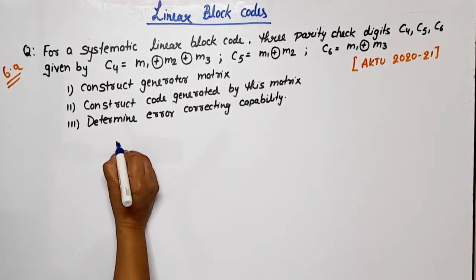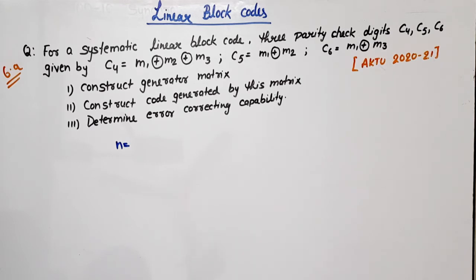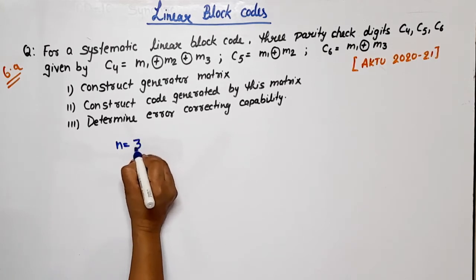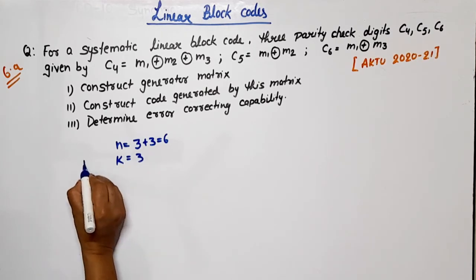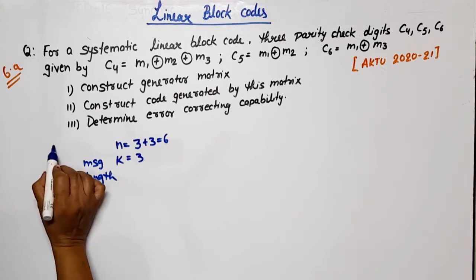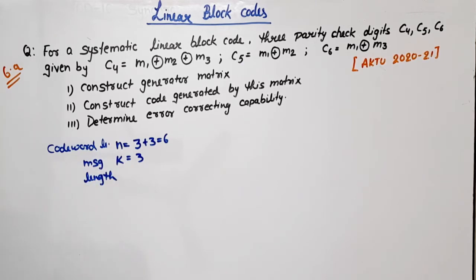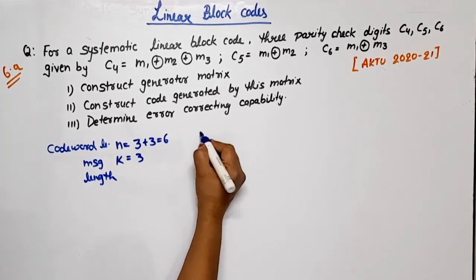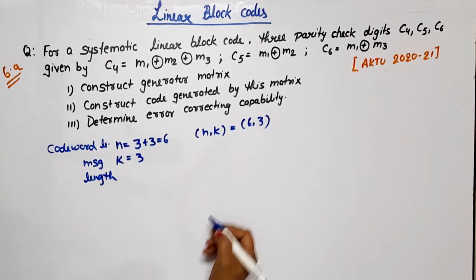Now, this is our linear block code. What are the n and k values? n means the length of the code word. We can observe C4, C5, C6 means 3 check bits, and message bits M1, M2, M3 means n = 3 + 3 = 6, and k, the message length, is 3. So our linear block code is (6,3).